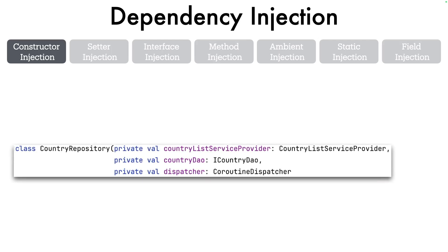Let's have a look at this particular code. It's a class called country repository and it takes three parameters — all constructor parameters: the country list service provider, country DAO, and dispatcher. You need not worry what these actually are; just understand the semantic and syntax of how this looks.